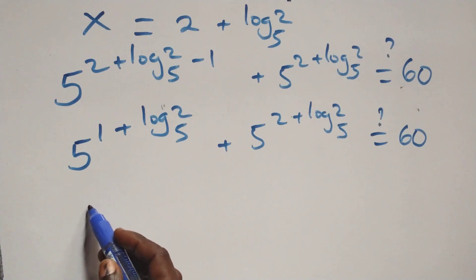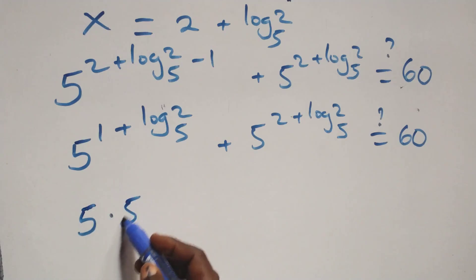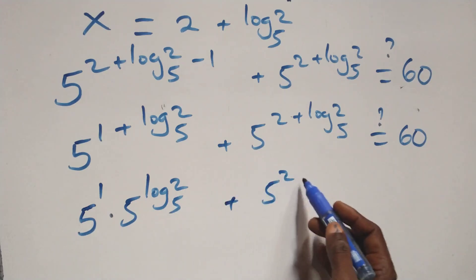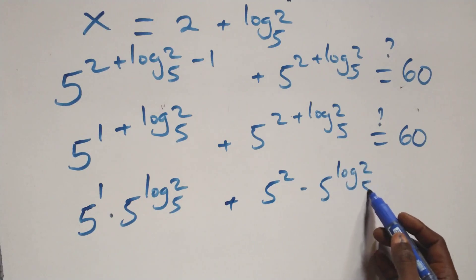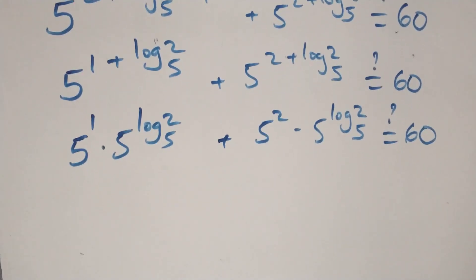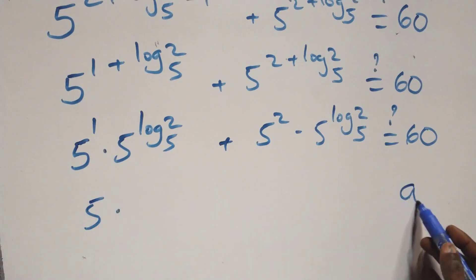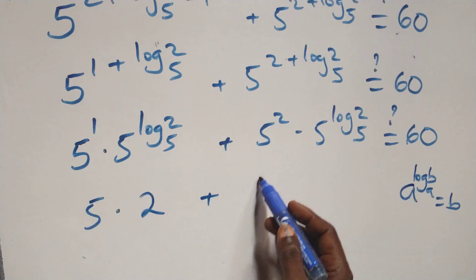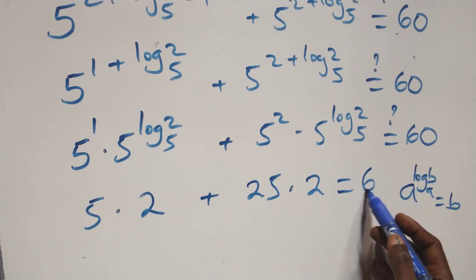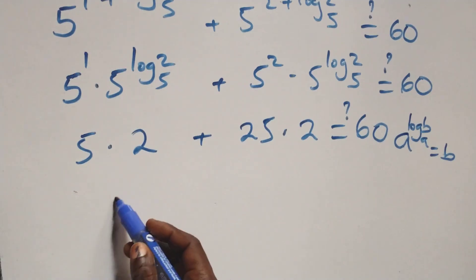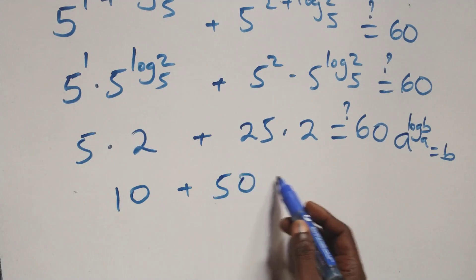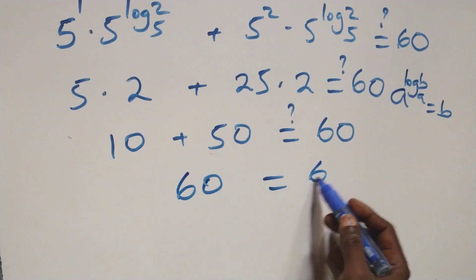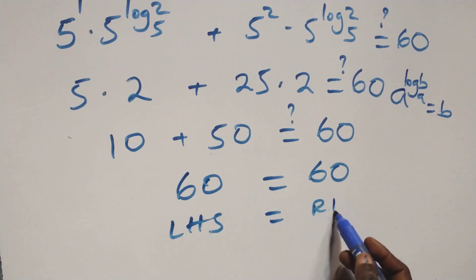We separate using the law of indices: 5 times 5 raised to power log₅2, plus 5 squared times 5 raised to power log₅2 equals 60. Applying the identity a raised to power log_a(b) equals b, we get 5 times 2 plus 25 times 2 equals 60. That is 10 plus 50, which gives 60 equals 60. Left-hand side equals right-hand side.